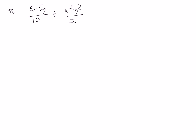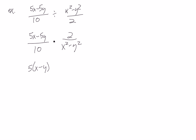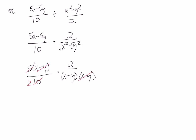Let's look at another example: (5X minus 5Y) over 10 divided by (X squared minus Y squared) over 2. It's division, so first step, let's change it to a multiplying question by multiplying by the reciprocal. Now we do factoring. On the left side we can common factor out a 5, giving 5(X minus Y). For the second fraction, we can factor the difference of squares, giving (X plus Y) and (X minus Y). Everything is factored, so now we cancel: the (X minus Y)'s cancel, then we divide 5 out of 10 giving 2, and the 2's cancel. Our final answer is 1 over (X plus Y).